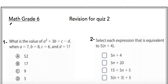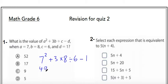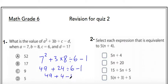First, we will substitute: a squared is 7 squared, plus 3 times b which is 8, divided by 6 minus 1. That gives us 49 plus 24 divided by 6 minus 1, which is 49 plus 4 minus 1, so 53 minus 1 equals 52. The answer is 52.